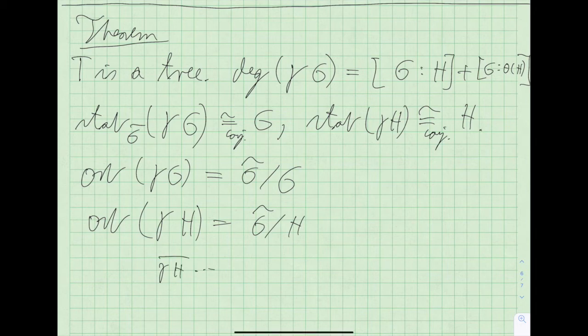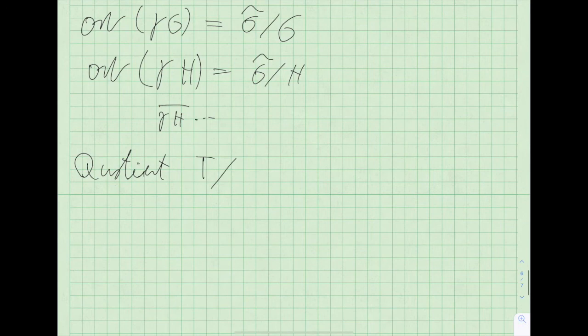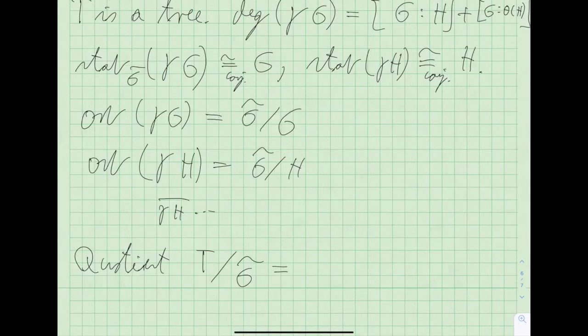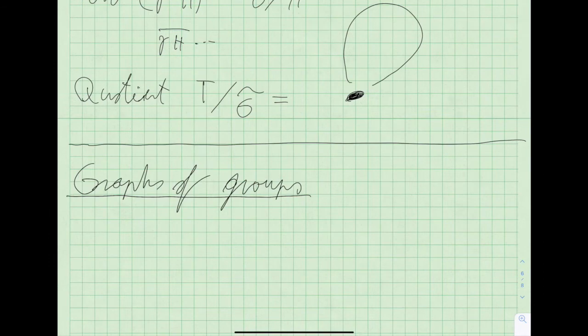This action is transitive, so there is only one orbit of each type: the orbit of a vertex is just all cosets of G, and the orbit of an edge is just all cosets of H in the HNN extension. The quotient graph T mod G-tilde, since there is only one orbit of vertices and one orbit of edges, is just a single loop.